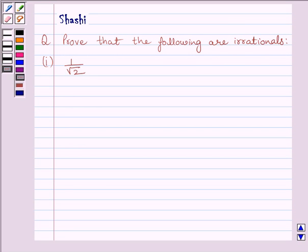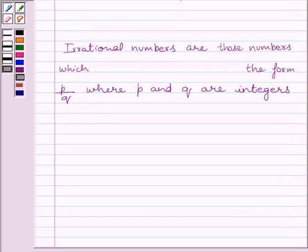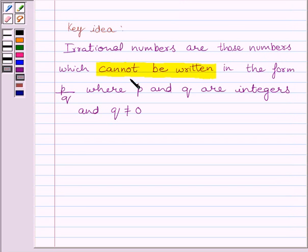First of all, let us know what are irrational numbers. Irrational numbers are those numbers which cannot be written in the form P upon Q, where P and Q are integers and Q is not equal to 0. This is the key idea to solve the given question.